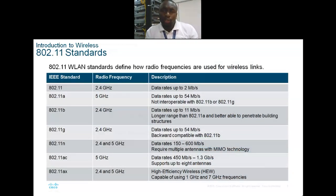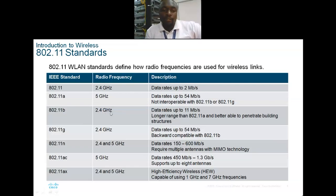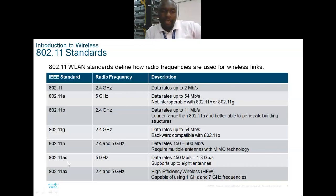Wireless standards to note: 802.11 runs at 2.4 GHz with small bandwidth; 802.11a at 5 GHz with 54 Mbps; 802.11b at 2.4 GHz with 11 Mbps; 802.11g at 2.4 GHz with 54 Mbps; 802.11n at both 2.4 and 5 GHz with 150–600 Mbps; 802.11ac at 5 GHz with 450 Mbps to 1.3 Gbps; and 802.11ax at both 2.4 and 5 GHz with 1 to 7 Gbps.